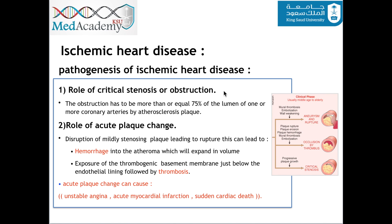Critical stenosis is when the lumen of the artery is 75% or more than 75% obstructed by an atherosclerosis plaque, as you can see in this picture. If the atherosclerosis plaque gets ruptured, it leads to acute plaque change, which will lead to either hemorrhage or thrombosis. Acute plaque change can cause unstable angina, acute myocardial infarction, or sudden cardiac death.